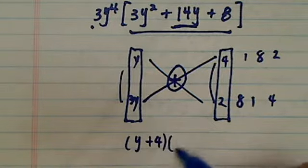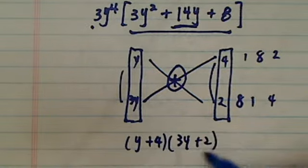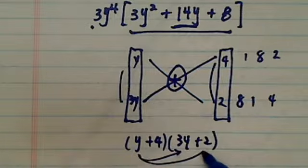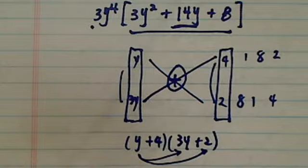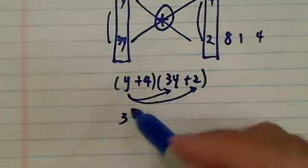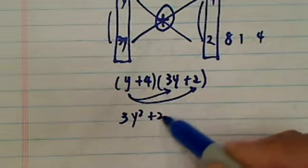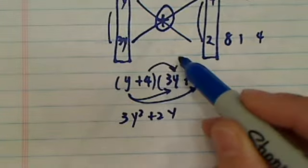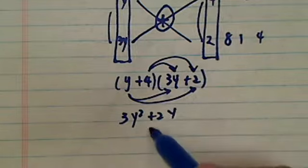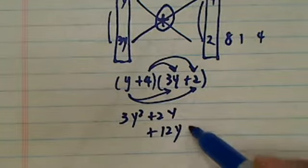So y plus 4 times 3y plus 2. That gives you, underneath here, 3y squared plus 2y. And then you do the top half here. You have plus 12y plus 8.